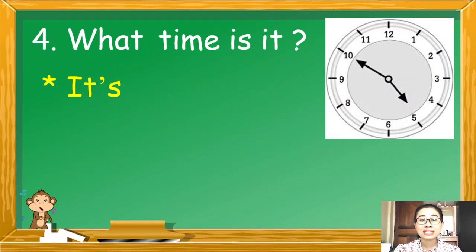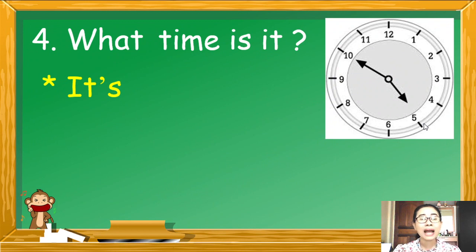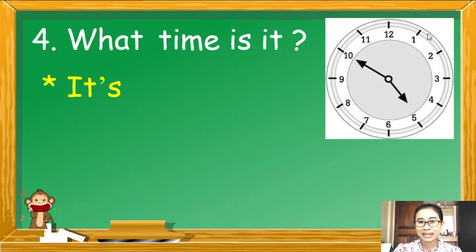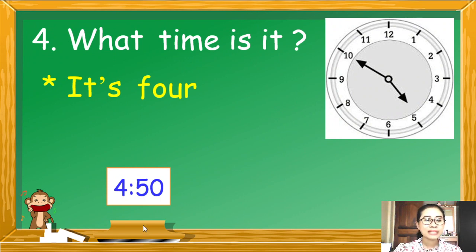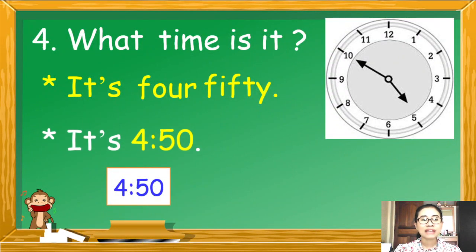Number 4: What time is it? เวลาเท่าไหร่ค่ะ? มาดูเข็มสั้นก่อนค่ะ เข็มสั้นอยู่ระหว่างเลข 4 กับเลข 5 แต่ยังไม่ถึงเลข 5 ดังนั้นก็หมายความว่า 4 นาฬิกา ต่อไปเข็มยาวชี้เลข 10 เป็นเวลา 50 นาที ดังนั้นเวลาคือ 4.50.